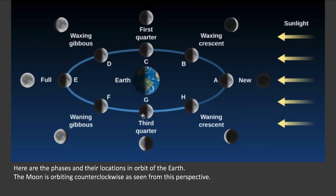The moon is orbiting counterclockwise. It is cycling around the earth in that direction. We're northern-hemisphere biased — we think of things from the northern hemisphere perspective, and so this is counterclockwise to us. The moon is going counterclockwise around the earth, and the earth is going counterclockwise around the sun. That's true for most things in the solar system — from the northern hemisphere perspective, things are generally going in that counterclockwise direction.